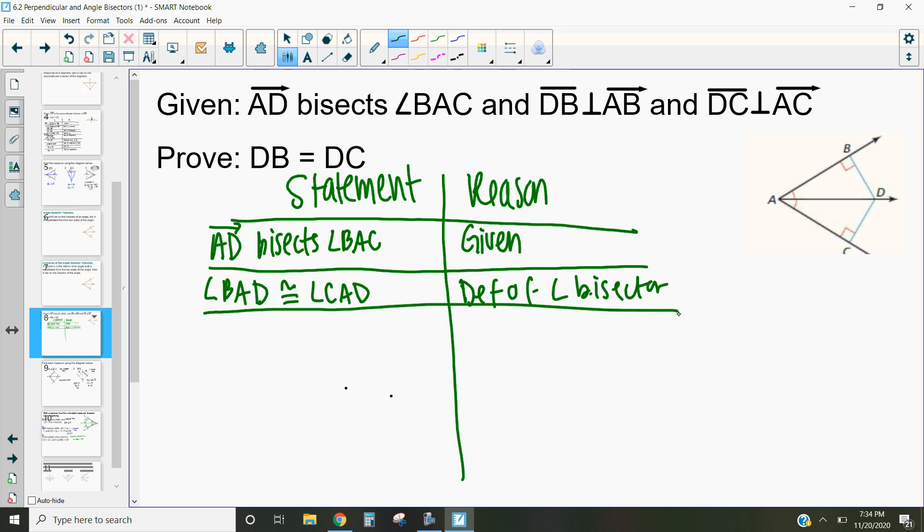Okay so now let's check out what that other given part tells us. So segment DB is perpendicular to AB and DC is perpendicular to AC. Great. So that is also given to us.